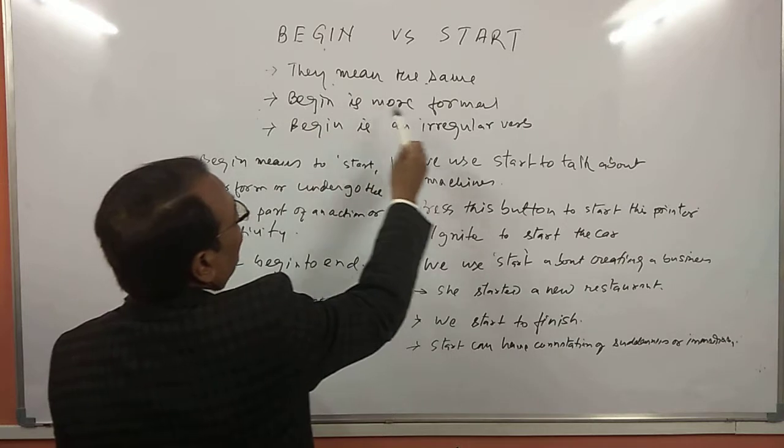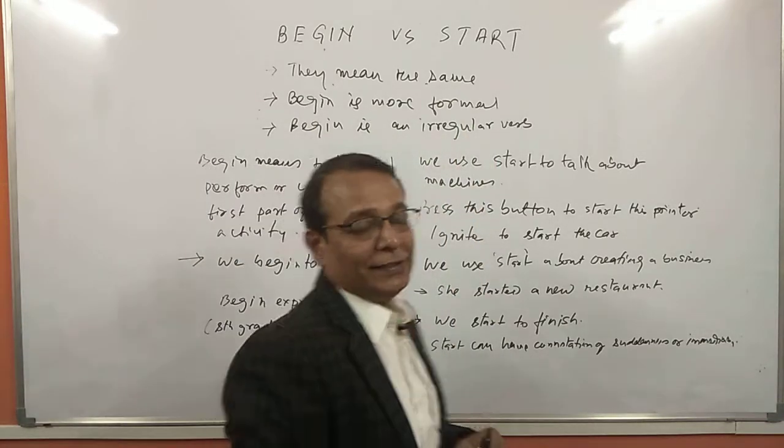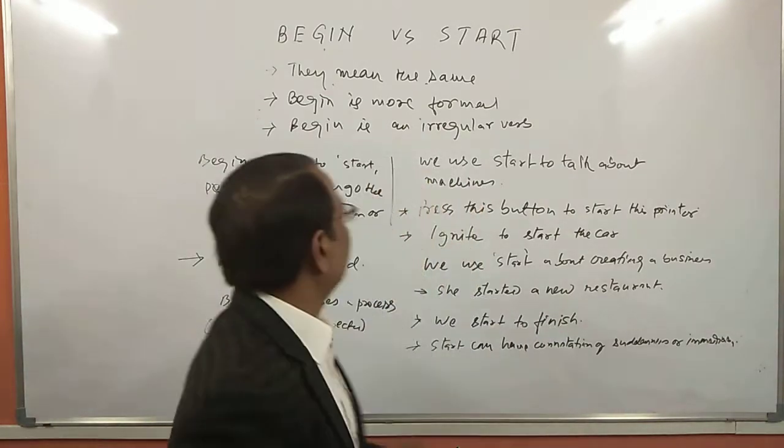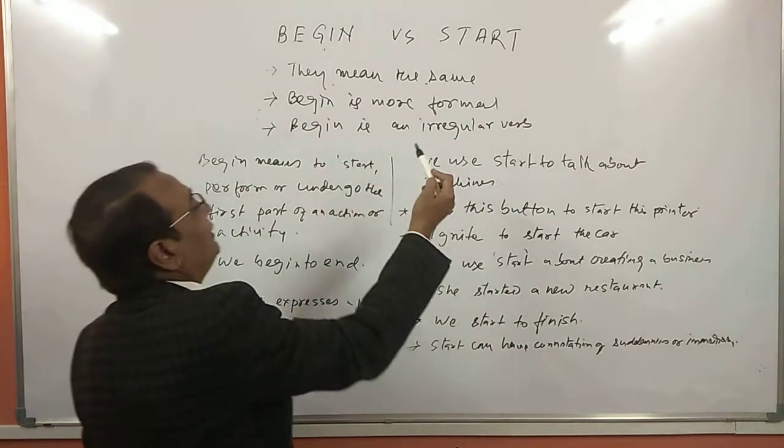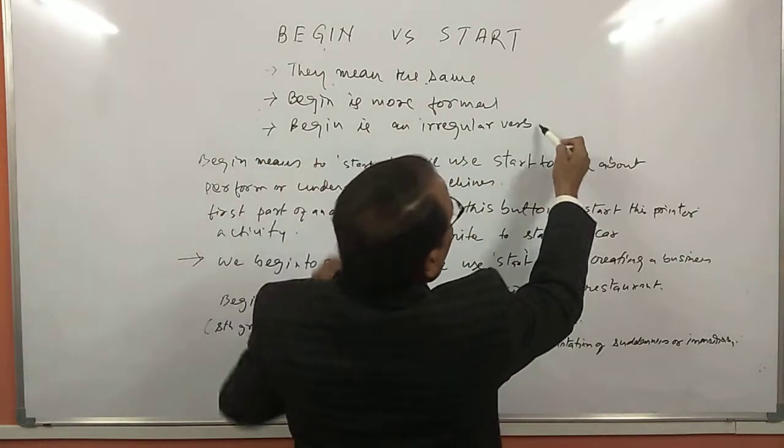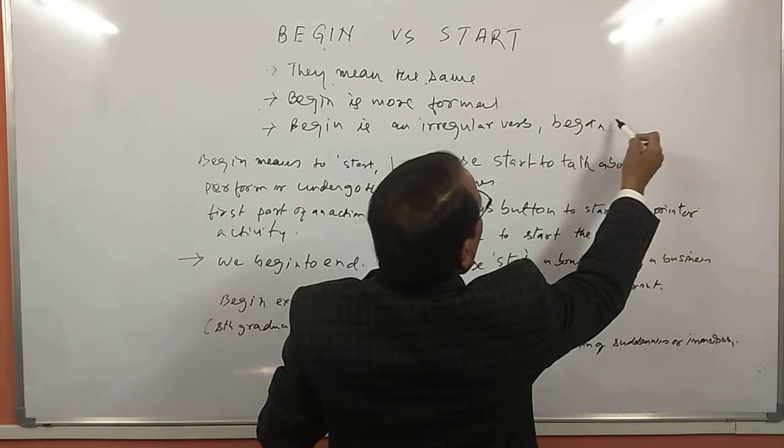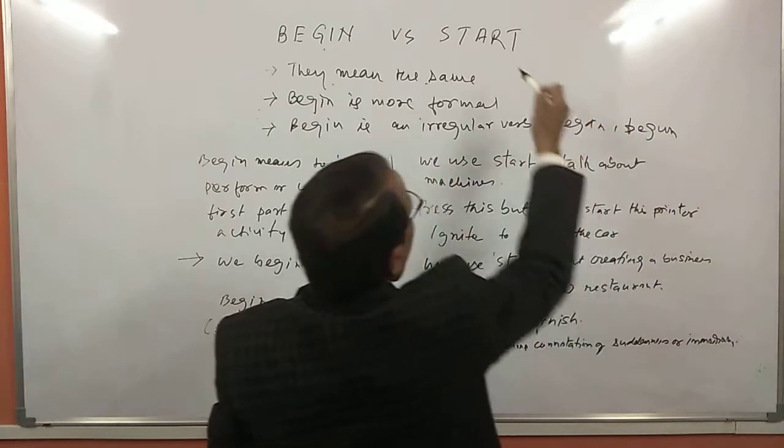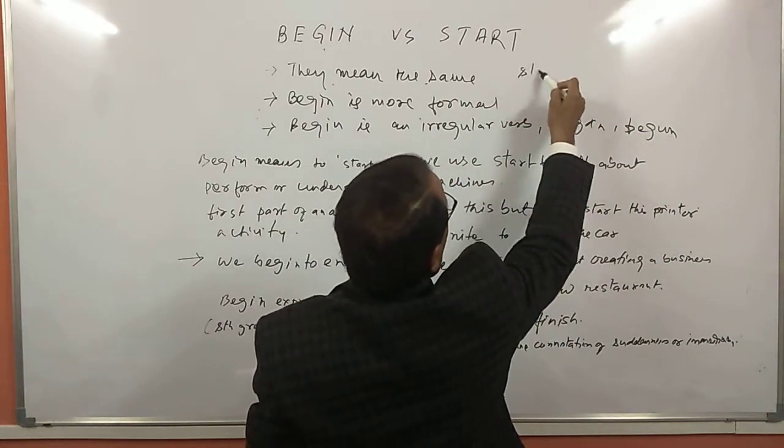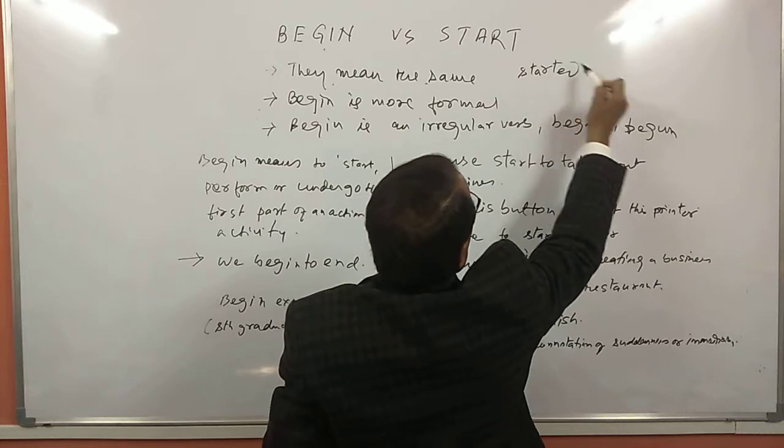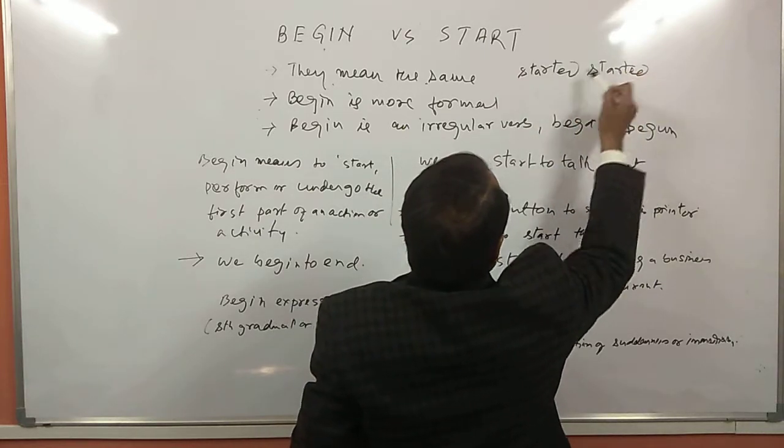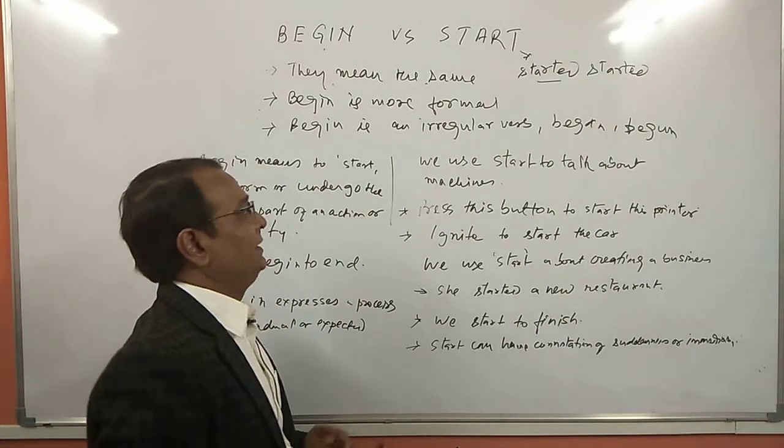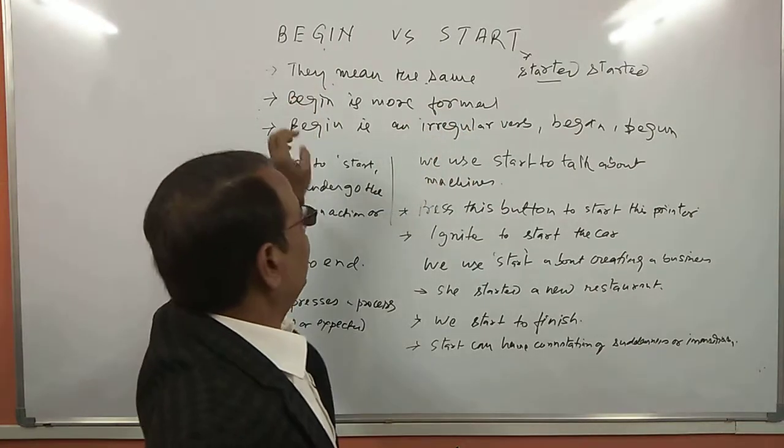The second thing I have written here: begin is more formal. When it is a question of informal and formal English, then begin is more formal in that case. The third one is begin is an irregular verb. That means begin, past form is began, and past participle is begun. Begin, began, begun. While in case of start, we are using started and started. Past participle is started and past is started. So that's a regular verb. Start is a regular verb and begin is an irregular verb.